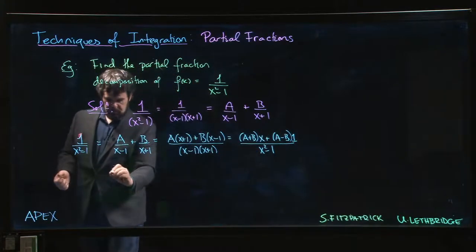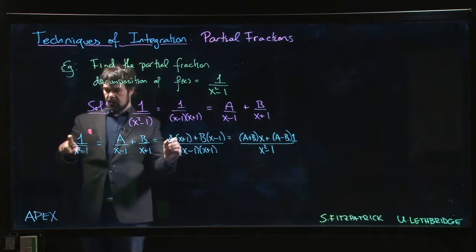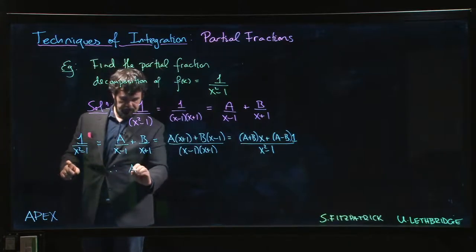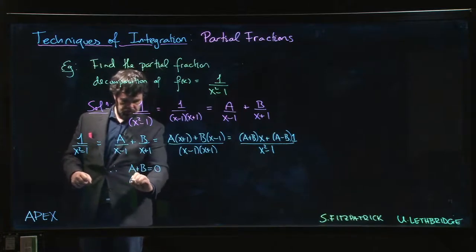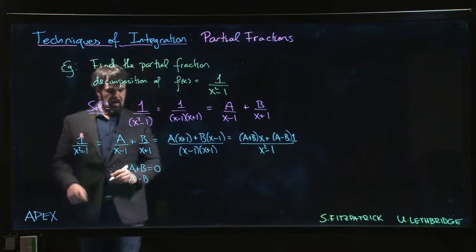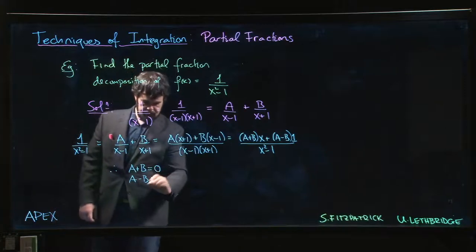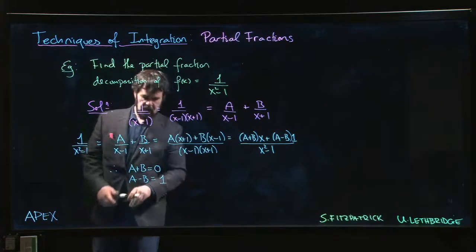So that means—well, there is no x term over here, so A plus B has to be 0. And A minus B has to equal 1.